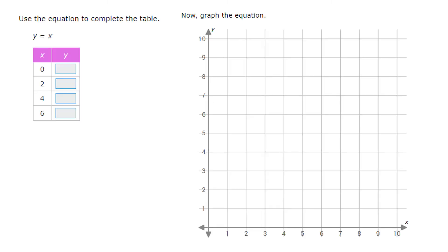So let's talk about how to complete a table and graph a proportional relationship. When they ask you to complete a table, all they're asking you to do is to use the equation that they gave you, for example, y equals x, and find out what all the y values are.